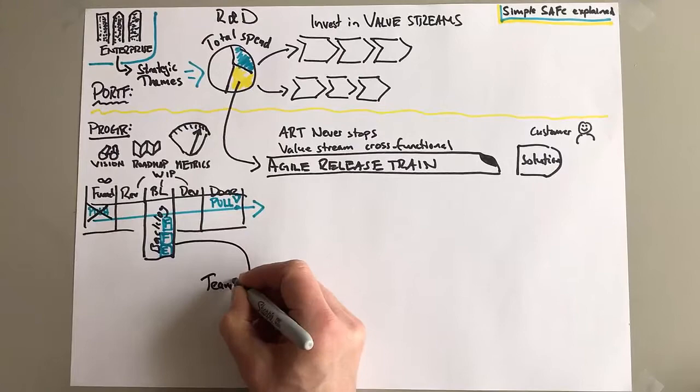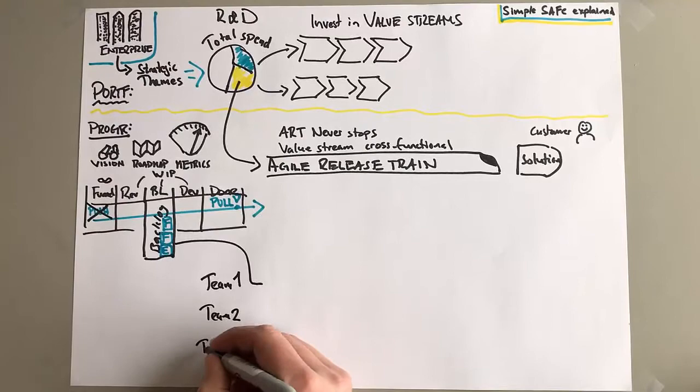Now how do we actually get work done here? Well, the teams pull work from the backlog. And the teams - what's the number of teams you have in an Agile Release Train?